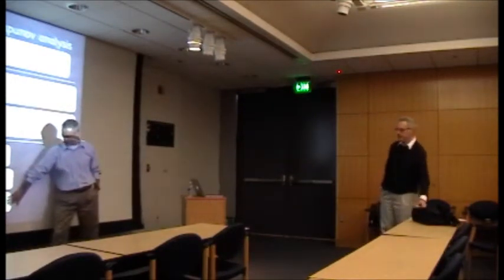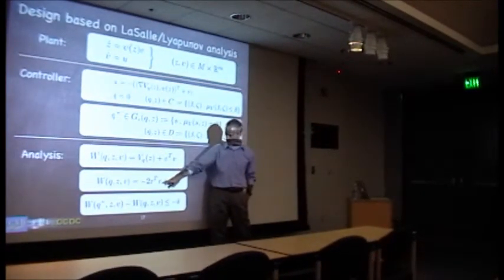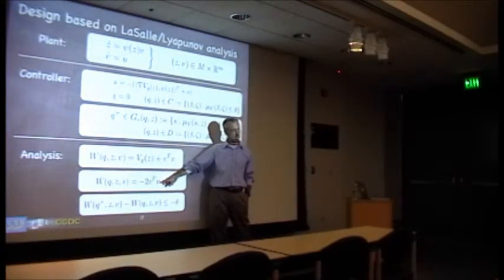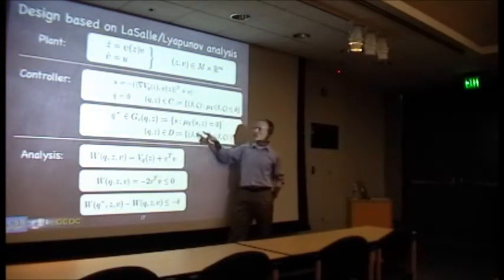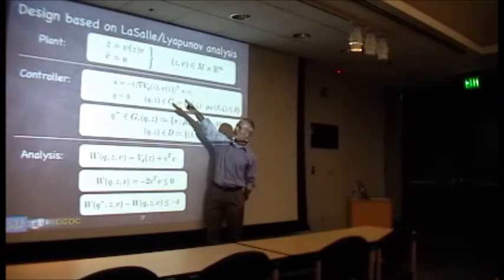If we can drive this function to zero, we're going to know that we're where we want to be. This guarantees that whenever we jump, W gets smaller, and this guarantees that whenever we flow—except in the case where v equals zero—W is also decreasing. So the only thing that could possibly happen is that we get stuck at W equal to some constant that's not zero, consistent with the velocity being zero. That's the only thing that can go wrong.